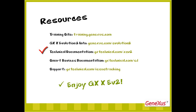Technical documents on GeneXus X Evolution 2 can be found at gxtechnical.com/xev2. This includes all related technical documents for the version, such as the steps to be taken in the conversion process outlined earlier. Smart device documentation is available at gxtechnical.com/sd, where you'll find technical documents relative to the new generator for developing smart device applications.